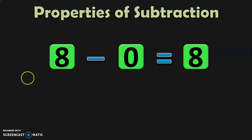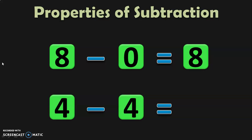The next property: 4 minus 4. What happens when you subtract a number from itself? The answer you get is 0. You have 4 pencils and you give away all 4 pencils — what remains? Nothing. Nothing or empty is 0. So when you subtract a number from itself, you get 0. This is also one of the important properties of subtraction.